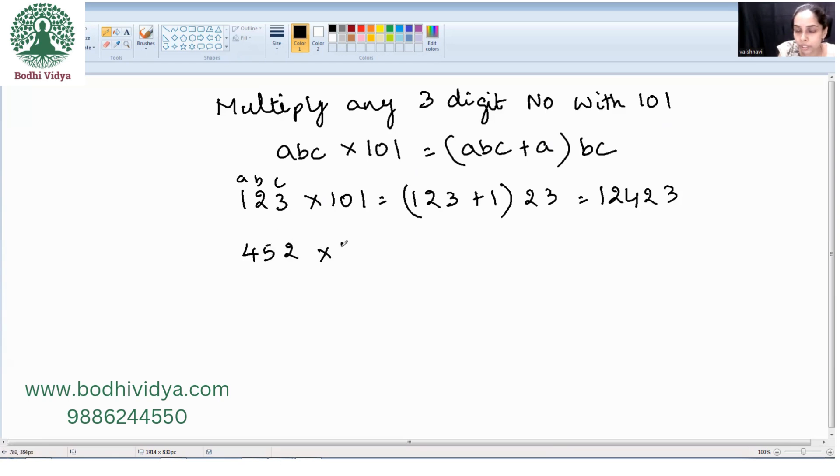452 into 101. That is 452 plus 4. A is what? 4. That is 456. BC is 52. Mind-blowing, right? In one step, straight away we are writing the answer. We will take one more number.